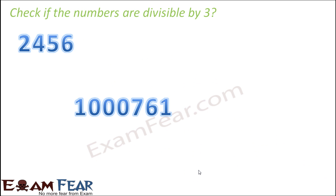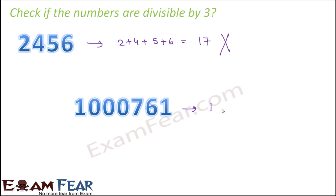Let us look at a few numbers and check divisibility by 3. For the first number, the sum of the digits is 2 + 4 + 5 + 6 = 17, and 17 is not divisible by 3, so that number is also not divisible by 3. For the next number, the sum is 1 + 7 + 6 + 1 = 15, and 15 is divisible by 3, so that number is also divisible by 3.